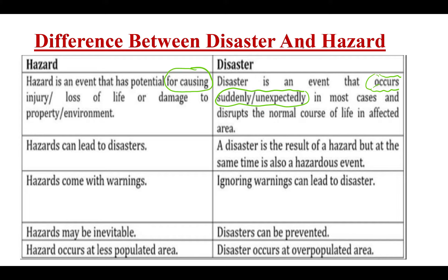Now let us discuss the difference between disaster and hazard. Hazard is an event that has potential for causing injury, loss of life, or damage to property and environment. While disaster is an event that occurs suddenly and unexpectedly in most cases and disturbs the normal course of life in the affected area. Hazard can lead to disaster, but a disaster is a result of hazard and is also itself a hazardous event. Hazard can come with warning, but ignoring that warning can lead to disaster. Hazard may be inevitable but disaster may be preventable. Hazard occurs at a less populated area while disaster occurs at an overpopulated area.